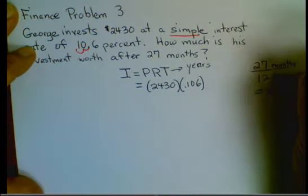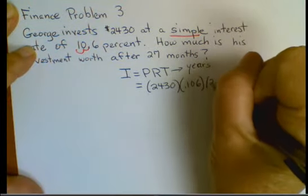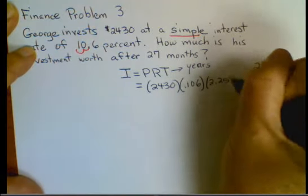So we had 27 months. We divided by 12 months. So 2.25 in years.